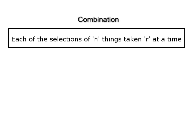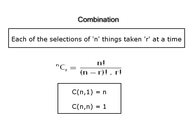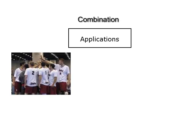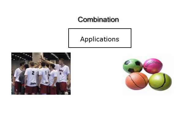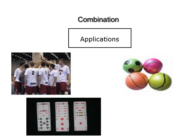Combination. Each of the selections of n things taken r at a time is called a combination. The total number of combinations is given by nCr = n factorial upon (n − r) factorial × r factorial. Therefore nC1 = n and nCn = 1. A combination is used for the following cases: formation of a group, team or committee; selection of balls from an urn; selection of cards from a well shuffled pack of 52 playing cards; in many geometrical problems; and in general any selection where order is immaterial.